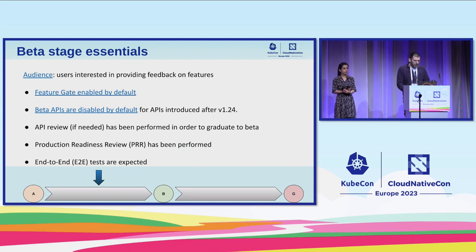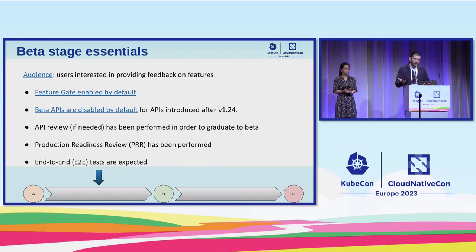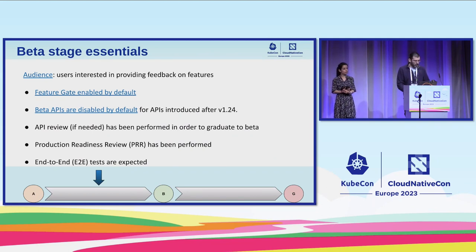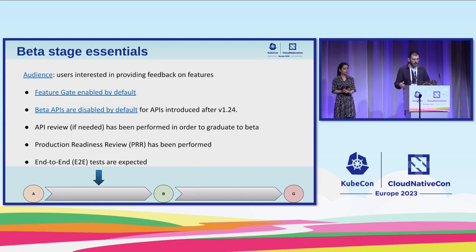This is changed in the 1.24 cycle for REST APIs. REST APIs at beta — those exposed by the API server — are no longer enabled by default. So if your change involves changes to the REST APIs, you may want to check the changes introduced in the KEP link. Another important thing when planning promotion to beta is that we need to make sure the API review is addressed, because this gets more and more detailed as the feature matures. Also, the production readiness review must have been performed and all the criteria met.